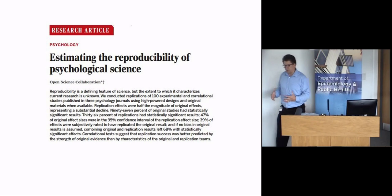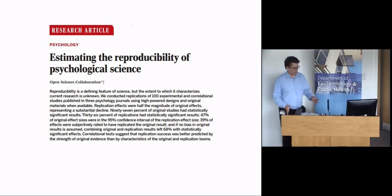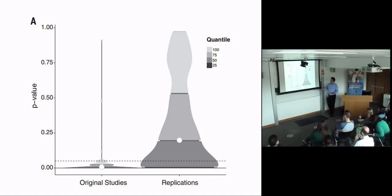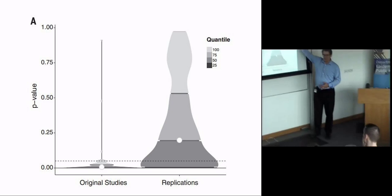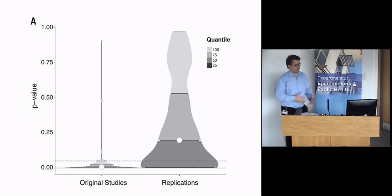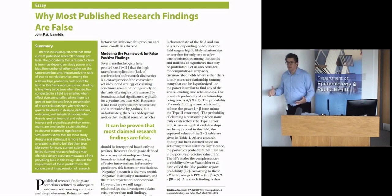Going on at the same time were the rumblings of another reproducibility crisis, this one in psychology. A particularly notable analysis from the Open Science Foundation published in Science: they replicated a hundred studies in psychology using good methods and high-powered studies. The distribution of p-values in the original published studies versus the replications drew more attention to the use of p-values and more conversation.